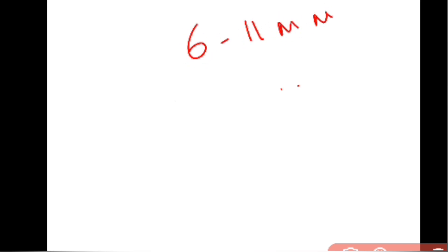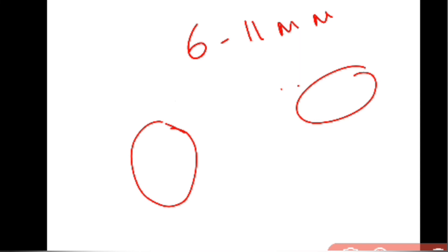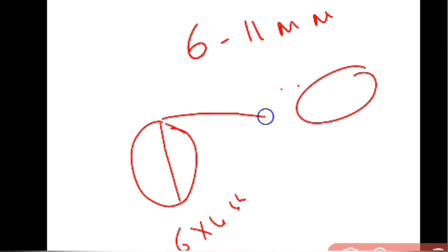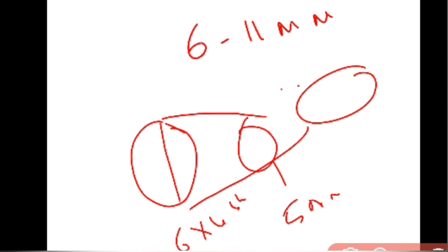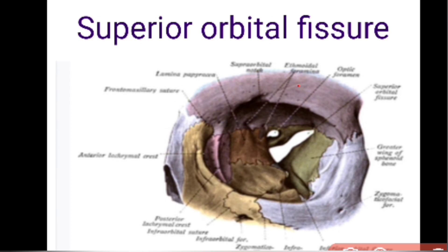The optic canal attains adult size by 4 to 5 years. It is approximately 6 to 11 millimeters in length. Its shape changes: on the orbital side it is vertically oval, measuring about 6 × 4.5 millimeters; in the middle it is circular, measuring 5 millimeters in diameter; and on the cranial side it is horizontally oval, measuring 4.5 to 6 millimeters. Meningiomas and optic nerve gliomas arising from the optic nerve can cause unilateral enlargement of the optic canal, detectable on X-ray.